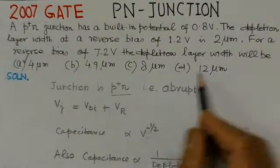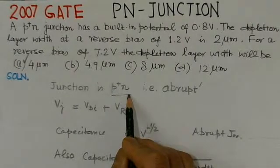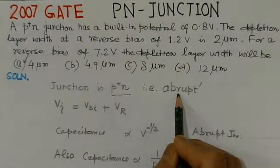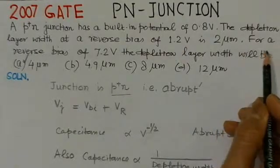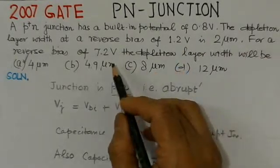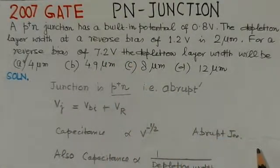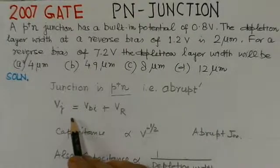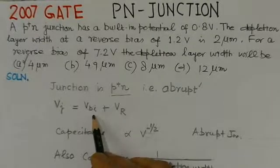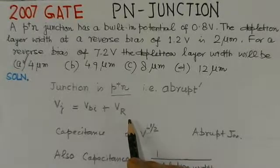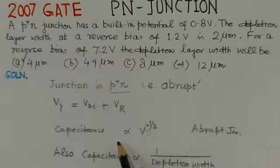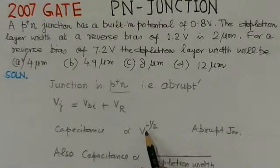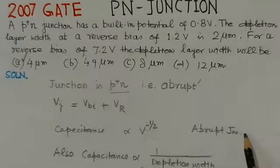The junction given here is P-plus-N, meaning it is an abrupt junction. The depletion layer at a reverse bias of 1.2 volts is given, and we have to find the depletion layer width at 7.2 volts. The junction voltage is taken as the built-in potential plus the applied reverse bias. For an abrupt junction, the depletion capacitance is proportional to V to the power of minus one-half.